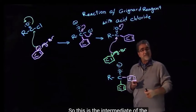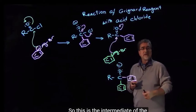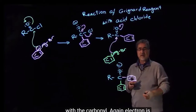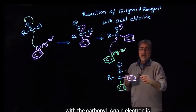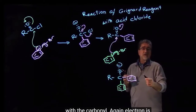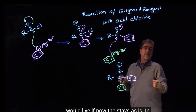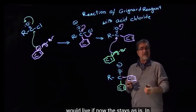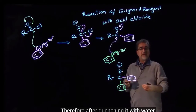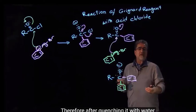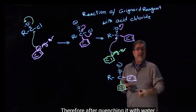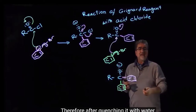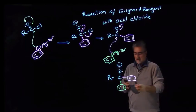So this is the intermediate of the second mole of the reagent not reacting with the carbonyl. Again, the electron is coming back. If there is a leaving group it would leave; if not, it stays as is. In this case we don't have a leaving group. Therefore, after quenching with water or any acid, the product is going to be an alcohol.